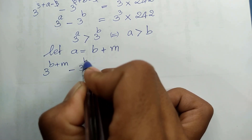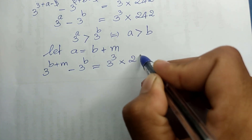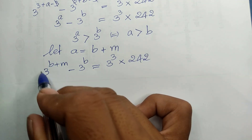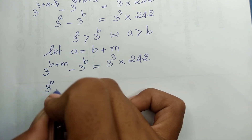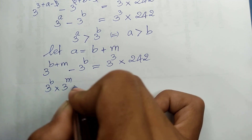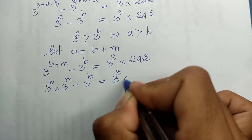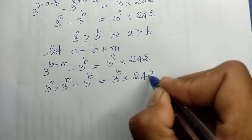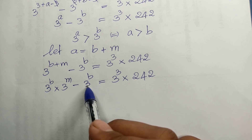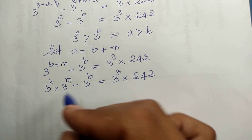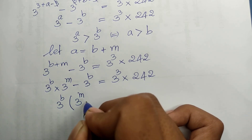We replace a with b plus m in the equation, so we get 3^(b+m) minus 3^b equals 3^3 × 142. Now 3^(b+m) can be written as 3^b × 3^m, so we have 3^b × 3^m minus 3^b equals 3^3 × 142.